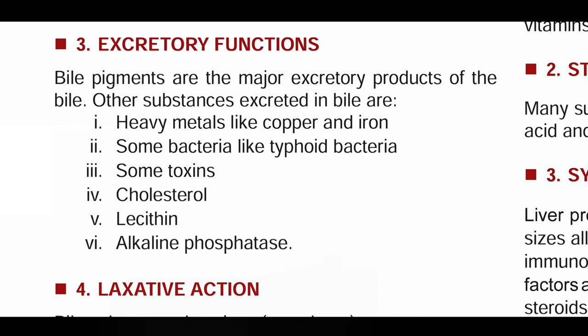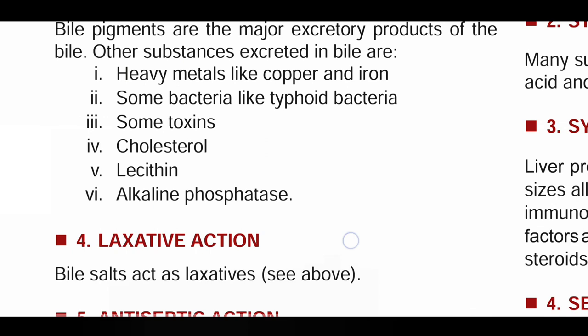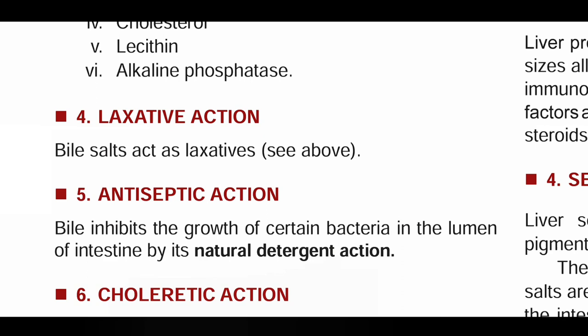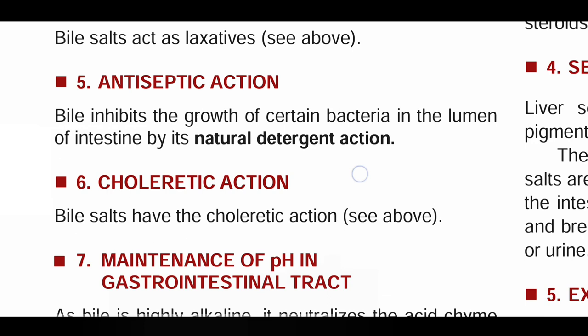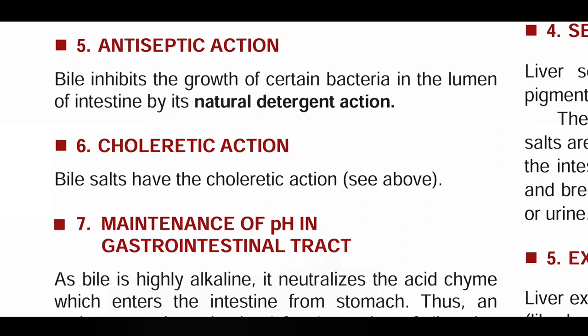What is excreted goes into the intestine, and from the intestine into the blood, then into the urine or stool. Heavy metals like copper and iron, some bacteria like typhoid bacteria, toxins, cholesterol, lecithin, and alkaline phosphatase are excreted. Next is laxative action. Antiseptic action: bile inhibits the growth of certain bacteria in the lumen of the intestine by its natural detergent action.